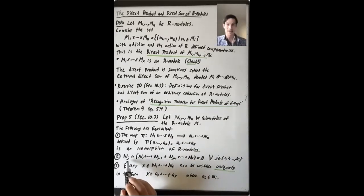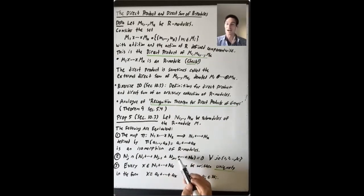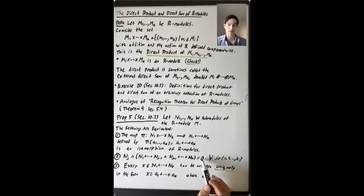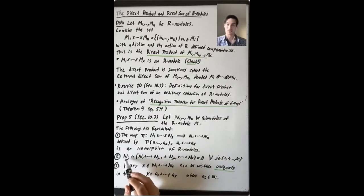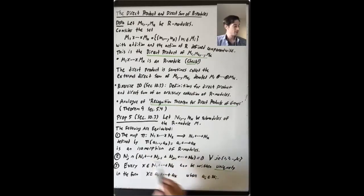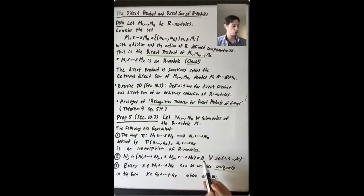The second equivalent condition: the intersection of N_j with the sum N1 + ... + N_{j-1} + N_{j+1} + ... + NK — that is, the sum of all the other modules but not N_j — equals zero. Both sides are submodules of M that contain the additive identity zero, but that's all they contain. This must be true for every j between 1 and K.